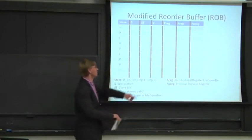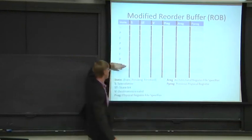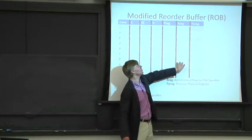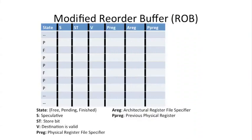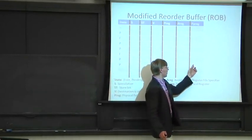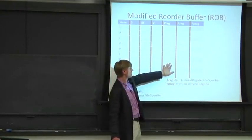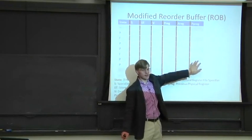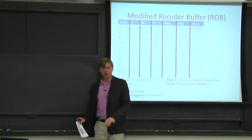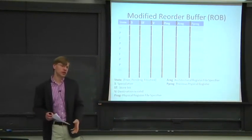When this instruction finishes and commits, we read the value from the physical register and write it to the location pointed to by the architectural register specifier. We also add a previous physical register field, which we read out of the rename table at the front of the pipe. For example, if this was register four — currently mapped to a new physical register — the previous physical register is the one that held the value of register four before the update. We need this to deallocate physical registers when the instruction commits.